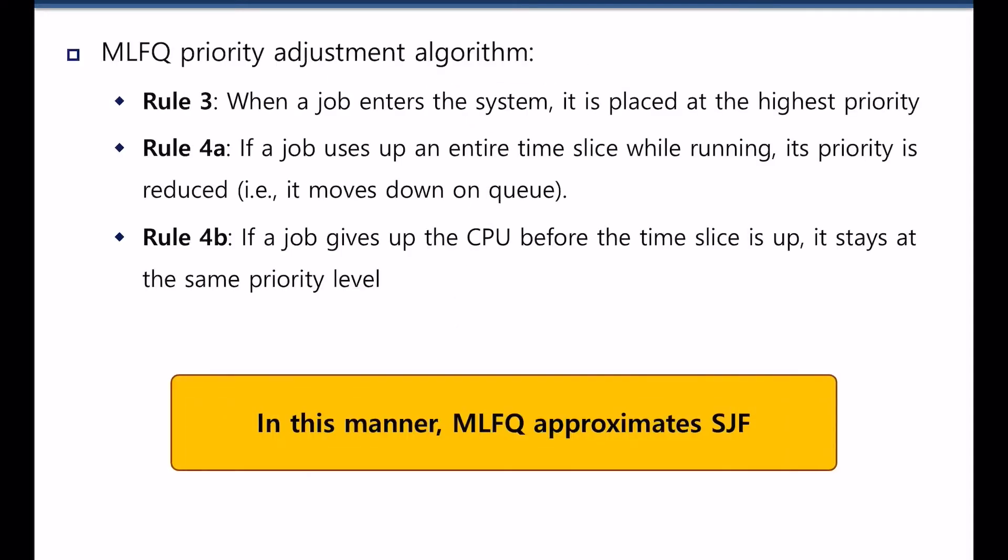There are other rules to remember. That's the priority adjustment algorithm. When a job first enters the system, it is placed at the highest priority. If a job uses up an entire time slice while it is running, its priority is reduced. It goes on to the next priority level. If a job gives up the CPU before the time slice is up, then it stays at the same priority level.